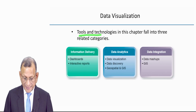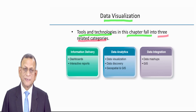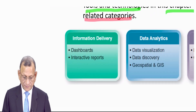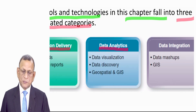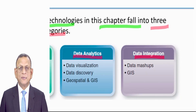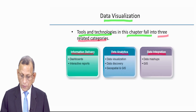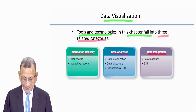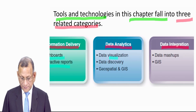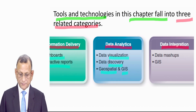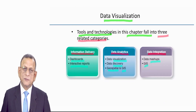Tools and technologies related to data visualization in this chapter fall into three related categories. The first is information delivery — how information will be delivered, which includes dashboards and interactive reports. The second is data analytics — how analysis will happen, which includes data visualization, data discovery, and geospatial and GIS. The third is data integration — how analyzed or raw data will be integrated into various other components, which includes data mashups and GIS. We will talk about all these components one by one.